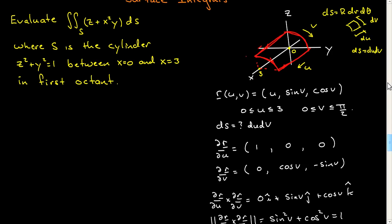Let's continue the problem then. The next thing you need to do is you need to express z and x squared y by using the parameterization. So let's do that. So z plus x squared y. z is cosine v. x squared is u squared, and y is sine v.